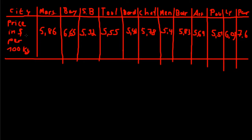If you put the data in R or Excel or whatever software you like and tell it to give us the mean — the mean is often written as X-bar, so if you see that, that means it is the mean — it would give us a mean of 5.941. That is the mean of the data.